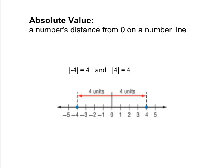Absolute value is the number's distance from zero on a number line. These bars indicate absolute value. The absolute value of negative 4 is 4, because negative 4 is 4 units away from zero. The absolute value of 4 is also 4, because positive 4 is 4 units away from zero. Distance and absolute value are always positive.